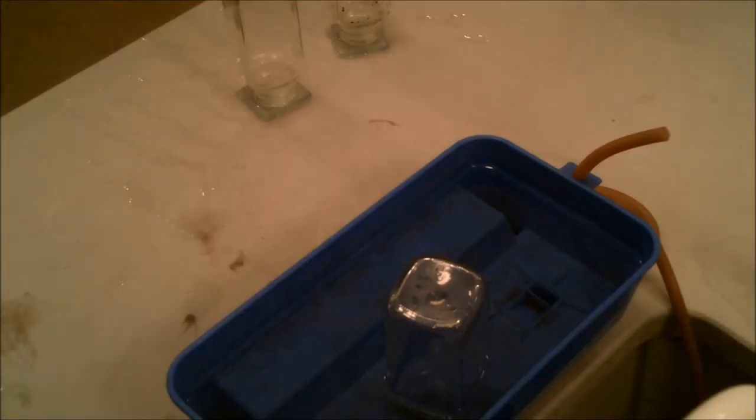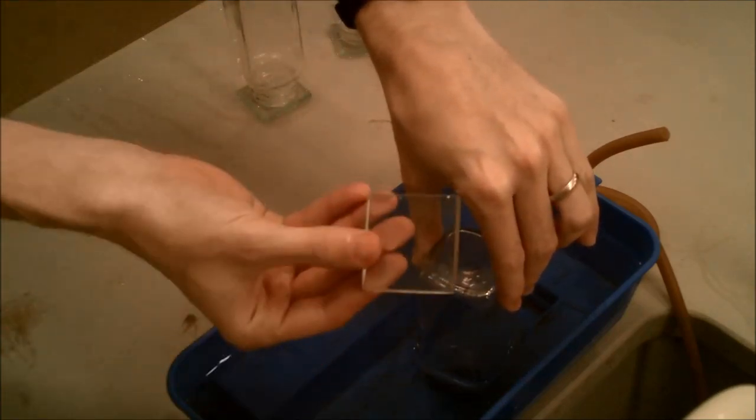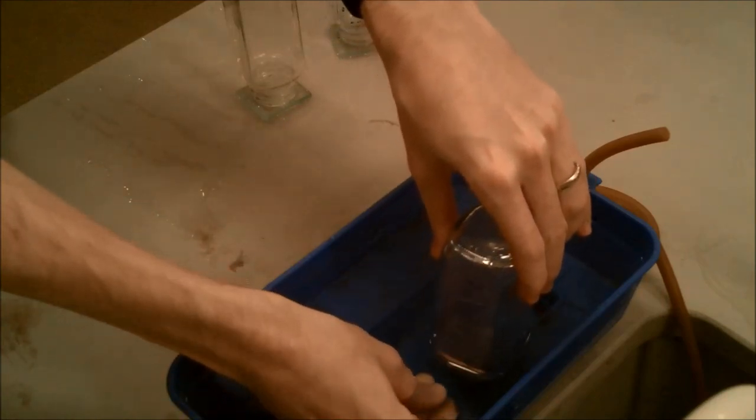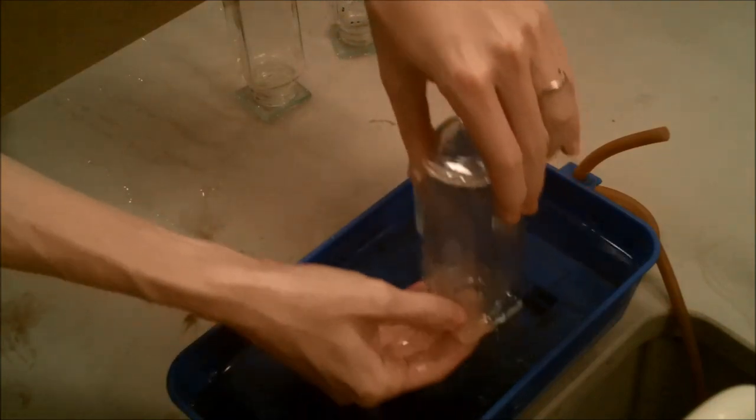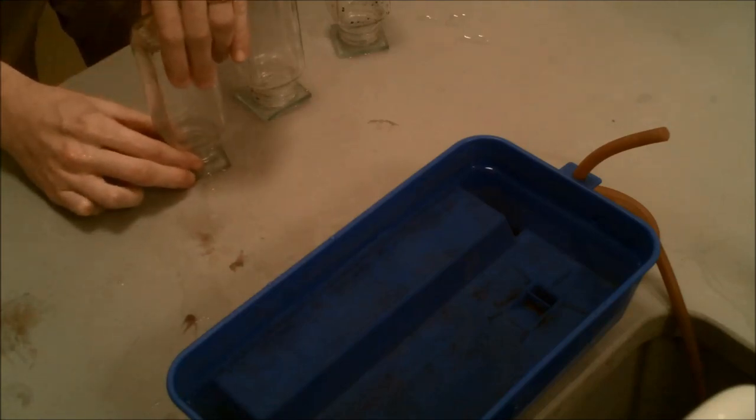Now we're to the part of the procedure where we remove the jars full of hydrogen gas out of the trough. You can see I've already removed two of them. This is where we use those glass squares again. So we put that underneath in the water to cover the opening so that the hydrogen gas stays in the jar. Take it out and then we just very carefully slide it onto the table so that that gas stays in a nice relatively sealed container.